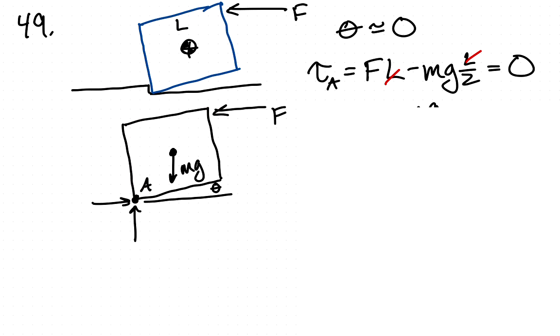And then we have, I've called this positive, and then we have a moment from the mass of the box, or the weight of the box, and this moment arm is this distance here, which is L over 2. And so we get minus Mg L over 2,